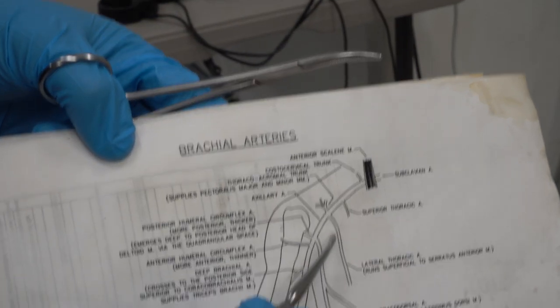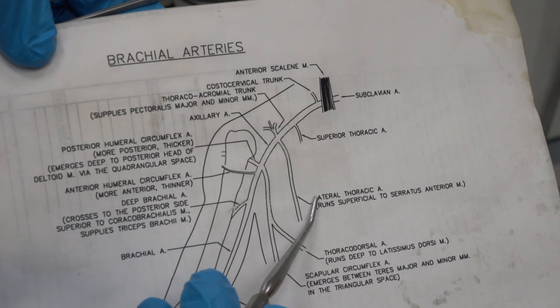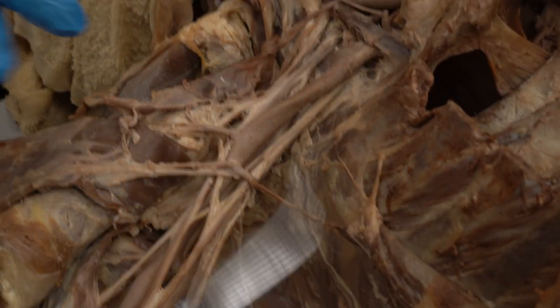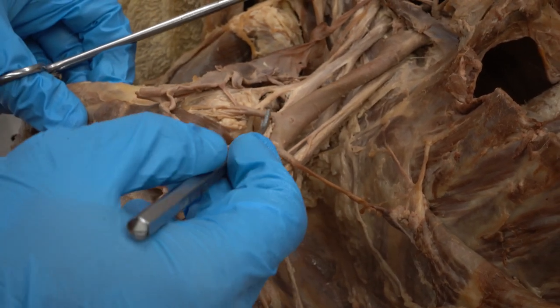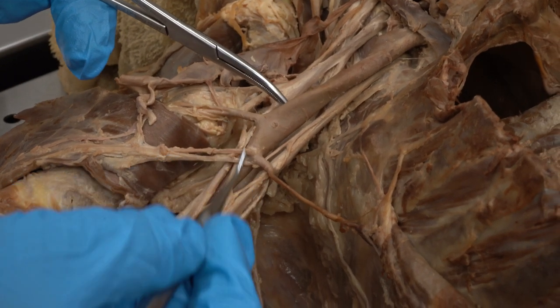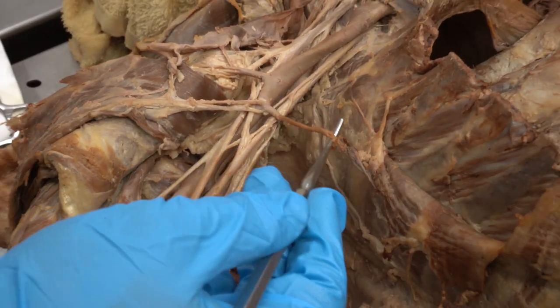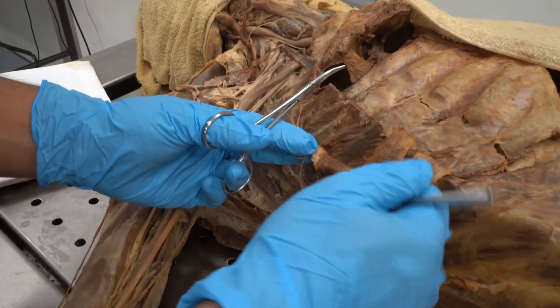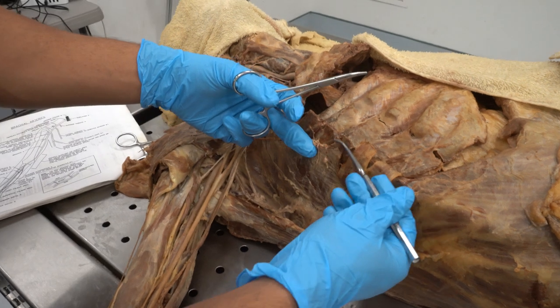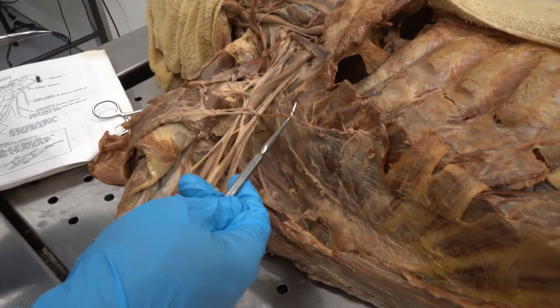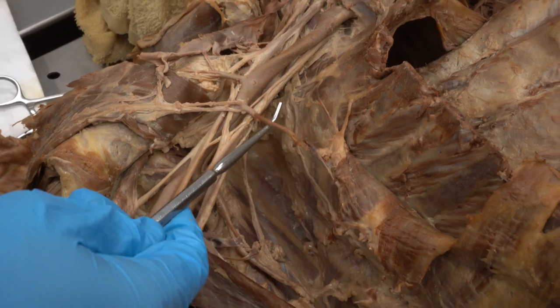The next one to notice is right underneath the thoracoacromial trunk — that's your lateral thoracic artery. The best way to find it is that it runs superficial to serratus anterior. Right here is your thoracoacromial trunk, and right here we see this vessel — that's your lateral thoracic artery, running superficial to serratus anterior, which has that little serrated shape. That's one way to identify lateral thoracic artery.